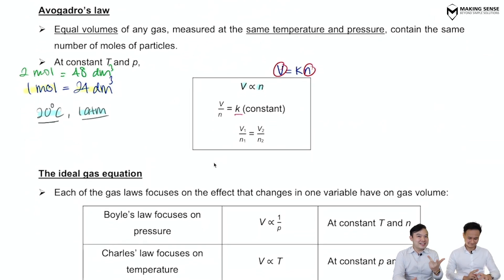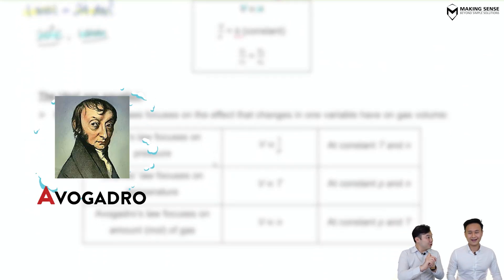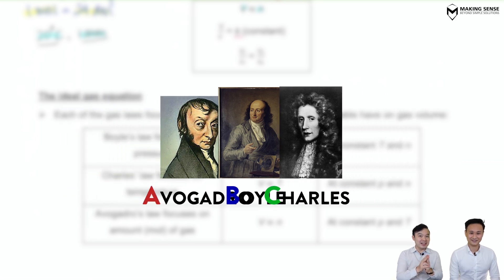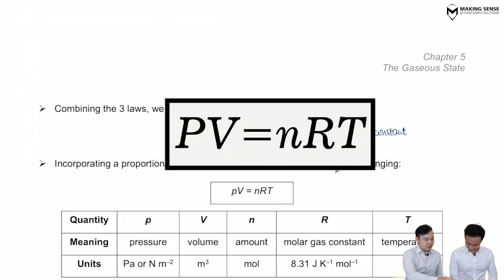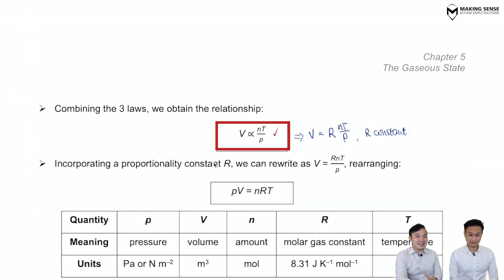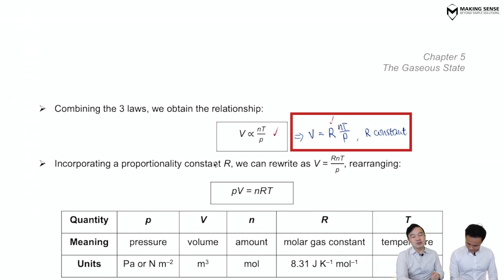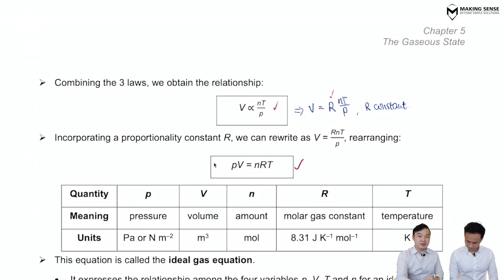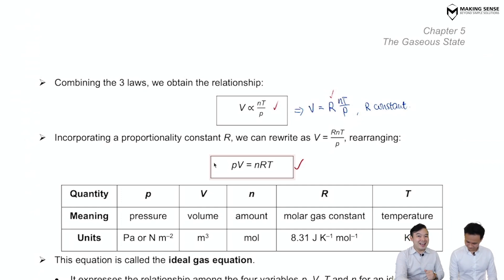So far we have all three laws: Avogadro's, Boyle's, and Charles's Law. Combining these three equations, V is directly proportional to nT/P. Introducing the proportionality constant R, we do some manipulation and arrive at the very important equation: PV = nRT. This is called the ideal gas equation — only an ideal gas obeys this law nicely.